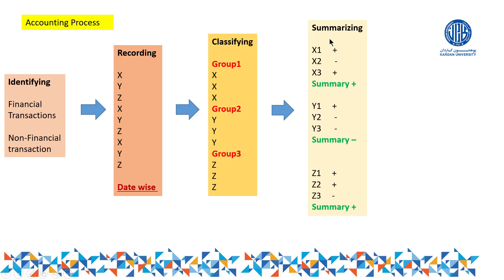In the summarizing step, we find the net result. Suppose three transactions belong to X: X1 is positive, X2 is negative, X3 is positive — overall X is positive. For Y: positive, negative, negative — overall Y is negative. For Z: positive, positive, negative — overall Z might be positive. At this stage we use the terms positive and negative; later on in accounting we will use the proper terms debit and credit.